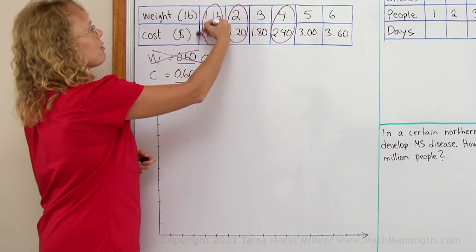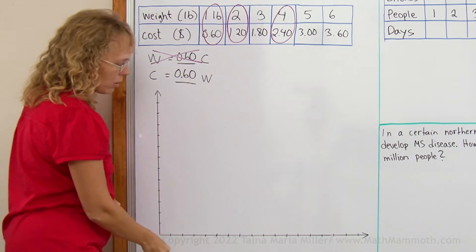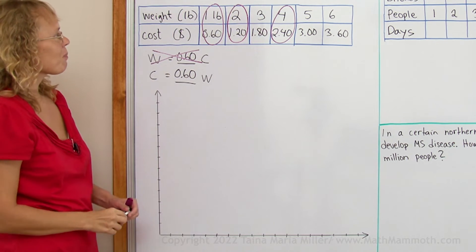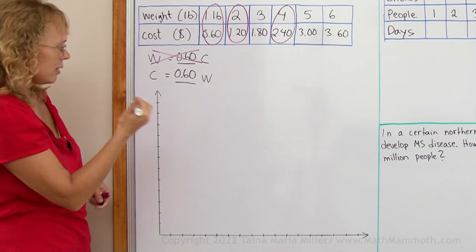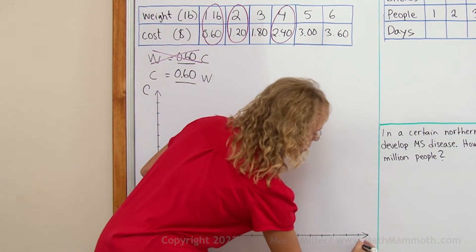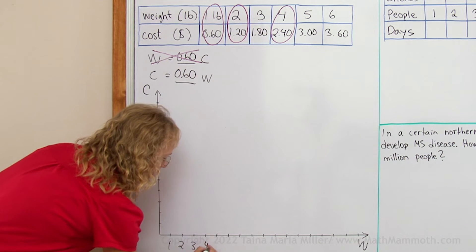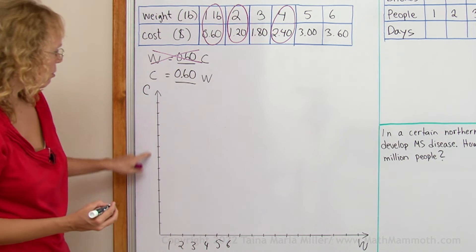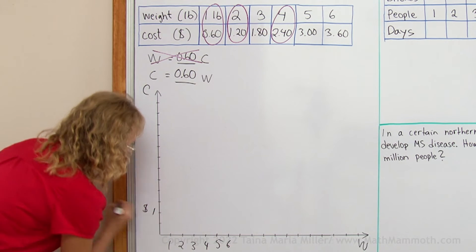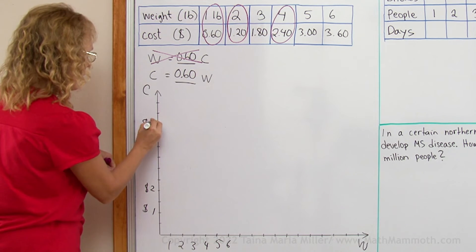Now we can also plot this in the coordinate plane. You can use these values because each one is a point in the coordinate plane. Instead of x and y axes, you will have weight and cost axes. Usually people put cost on the vertical axis and weight on the horizontal axis. This axis might go by 1's, and for the cost axis you would decide the scale — let's say $1, $2, $3, $4, $5 and so on.